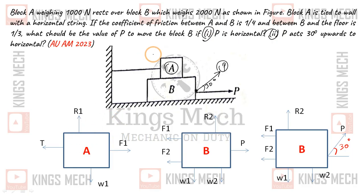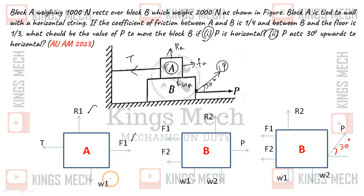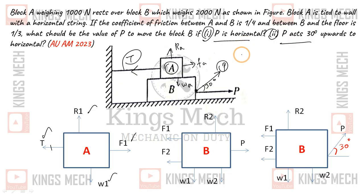For block A: tension T acts in the string toward the wall, friction F1 acts opposite to the direction of movement, weight W1 acts downward, and normal reaction R1 acts upward. Tension T will be the same for both cases. The equation for block A is simple and common to both cases.